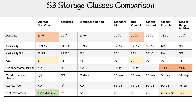Durability is 11 nines across the board. Notice I highlighted the one-zone classes because they are special — they operate in a single AZ. They have 11 nines of durability within that AZ because they're replicating copies of the data in that single AZ. But if that whole AZ goes out, you're going to lose that data. From a multi-AZ perspective, it's not as durable, but it still technically gets 11 nines.